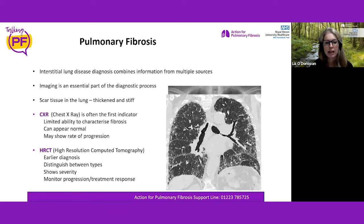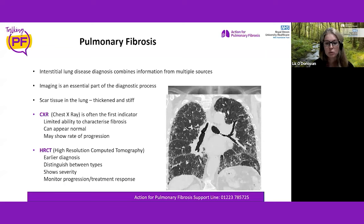We would progress to doing an HRCT — a high resolution computer tomography study. That's the same patient but scanned with a special machine using X-rays to produce very fine slices of the lungs. HRCT allows earlier diagnosis of fibrosis, which can dramatically transform the course of disease. It distinguishes between different types of fibrosis much better than a chest X-ray, and shows severity and monitors progression and treatment response.